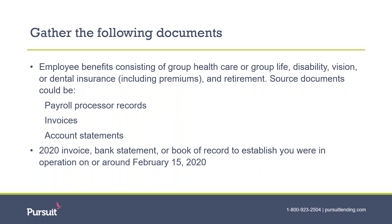In addition to the gross salaries for employees, you can also include fringe benefits in your calculation of total payroll costs. This would include group healthcare, disability, vision, or dental insurance, retirement plan contributions, and other fringe benefits provided to employees. The documents that may include these figures are payroll processing records, invoices from the providers, or account statements for the providers. Remember that this is an annual calculation, and you will need all statements to support it.